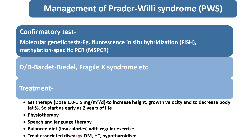We should also treat associated diseases such as diabetes, hypertension, and hypothyroidism. Delayed puberty should be treated by giving testosterone to male children and estrogen to female children. In our patient, the patient was on growth hormone therapy and also had diabetes, so was also on insulin treatment for diabetes.